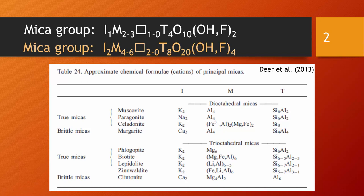We see here a table that summarizes the most important end members of the mica group that comes from Deer Howie and Zussman's handbook on rock forming minerals. There are two principal structural varieties of micas: the dioctahedral micas and the trioctahedral micas.